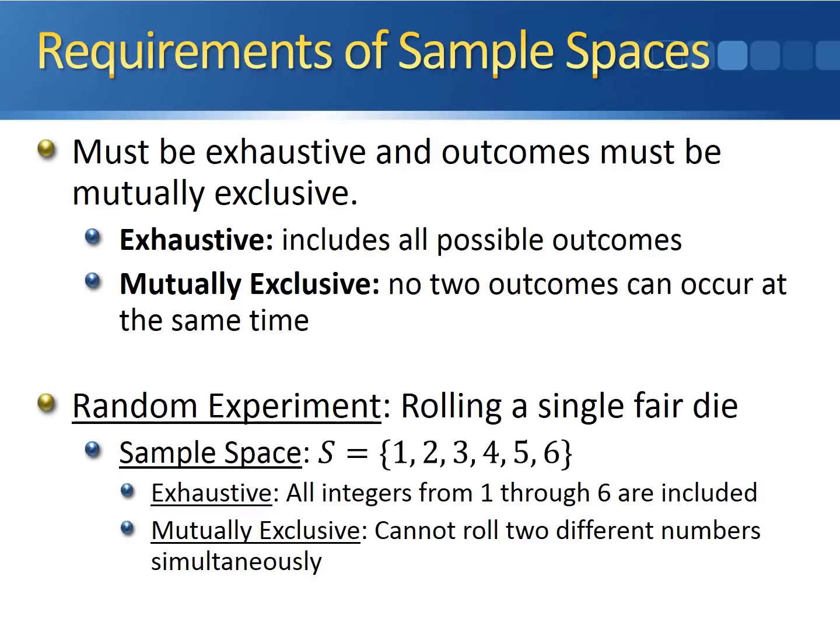This sample space is also mutually exclusive because we can't roll two different numbers simultaneously — it's impossible to roll both a one and a four on the same die. You can't get two different numbers by rolling this die a single time; you can only get one possible outcome. So this is what we mean by mutually exclusive: only one outcome can occur at once.